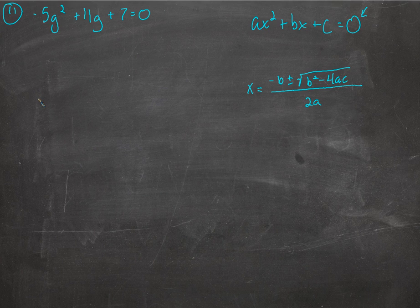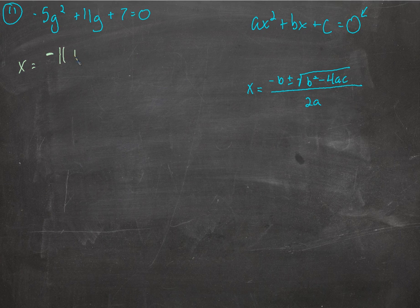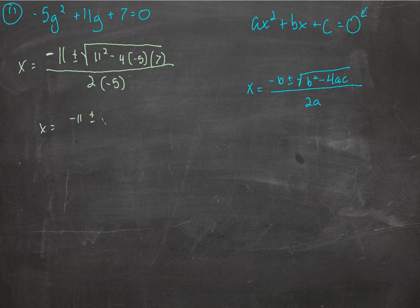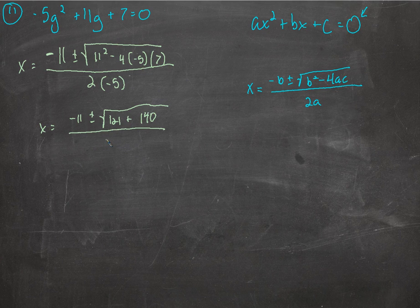Now we just have maybe some bigger numbers — that's really the only difference. That's x equals negative b, where b is the number multiplied by g to the first power, not the second power. So negative 11 plus or minus the square root of b squared, minus 4 times a — a is negative 5, that's the number multiplied by g squared — times c, which is 7, all over 2 times a. About 121. Negative times negative gives us a positive, so we've got 20 times 7 is 140, over negative 10.